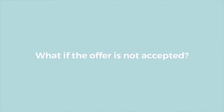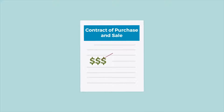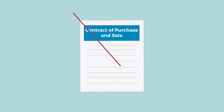What if the offer is not accepted? During negotiations, if a party does not agree to the terms presented to them, they may choose to alter the terms and present a counteroffer back to the other party. The parties may continue to exchange counteroffers until they either reach an agreement or the offer expires. If the parties do not reach an agreement or the offer expires, a binding contract will not be formed and neither party will have any obligation to the other.